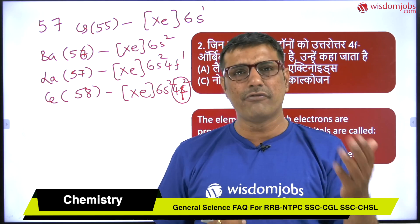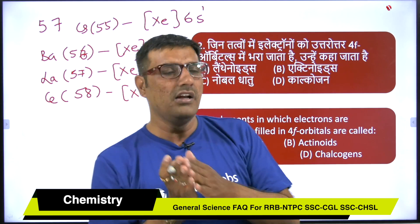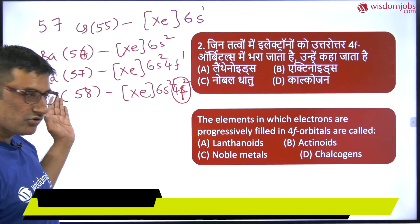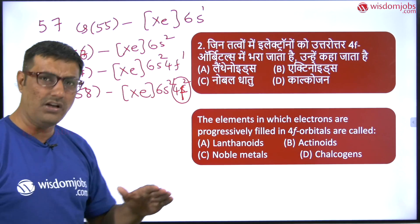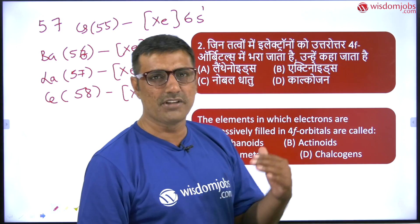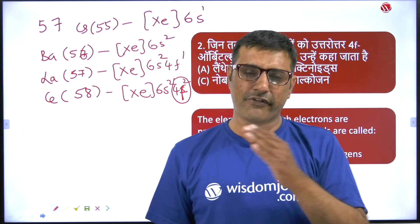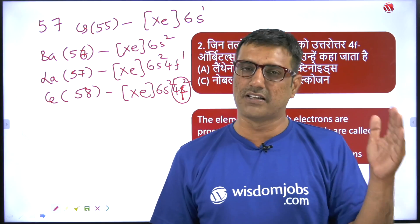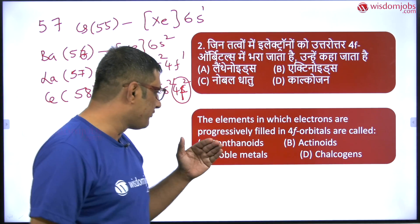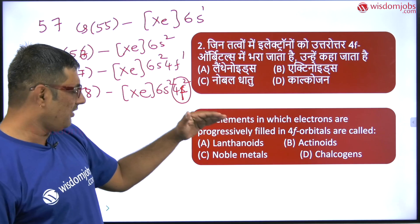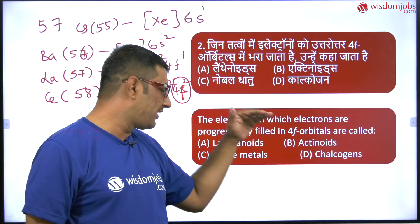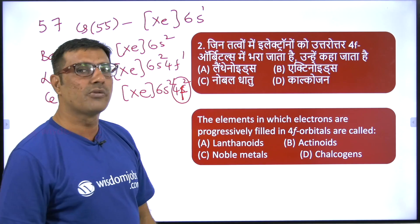So lanthanoids are those elements in which the 4f orbital is filled — from cerium to lutetium. The answer is lanthanoids.